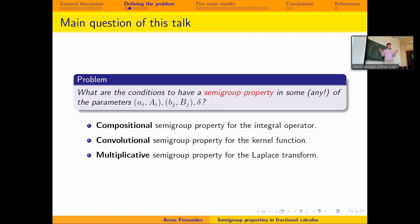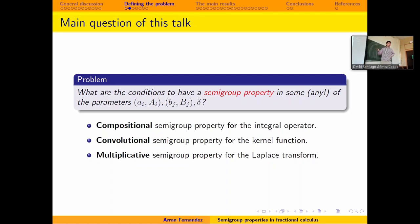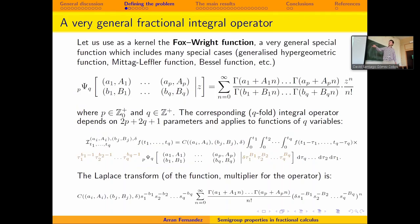The main question of this talk is: what are the conditions to have a semigroup property for this general operator? This general operator includes many special cases — for example, Prabhakar is a special case and has a semigroup property, while other special cases do not. For the integral operator, a semigroup property means that a composition of two integrals gives a new integral; for the kernel function, it means convolution; for the Laplace transform, it means a multiplicative semigroup property. These are all equivalent. We have many parameters — all the little a's, big A's, little b's, big B's, and the constant delta — giving 2P + 2Q + 1 different parameters.